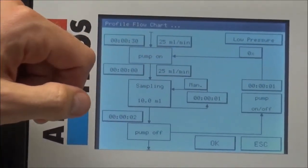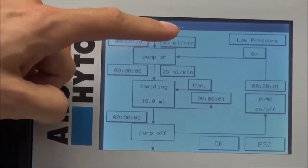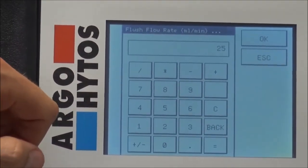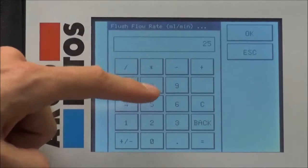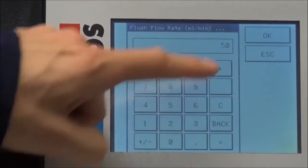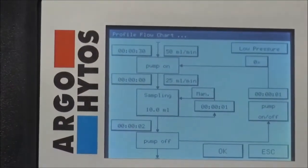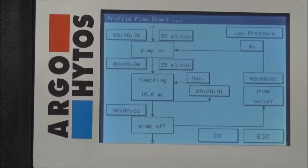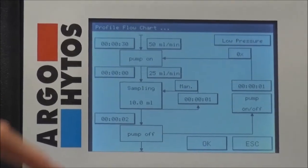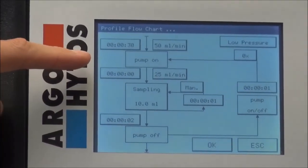What you also can do is change the pump flow to increase the volume that is used for flushing the hose. We want to change that from 25 what is the standard to 50 milliliters a minute. That just gives us clean results.